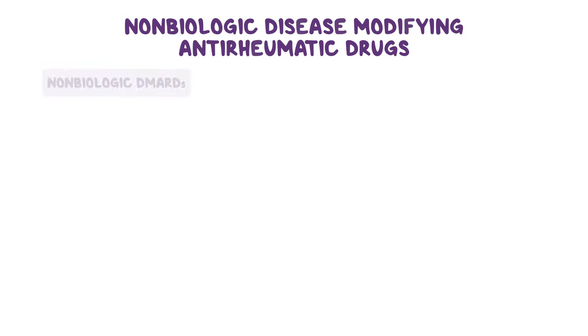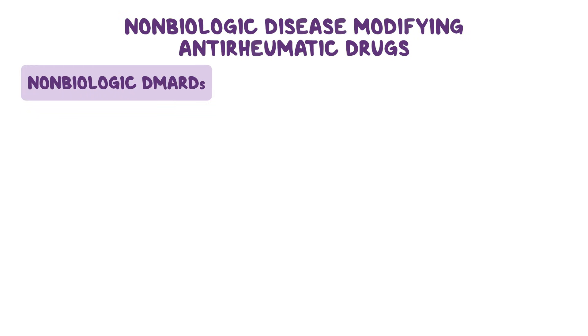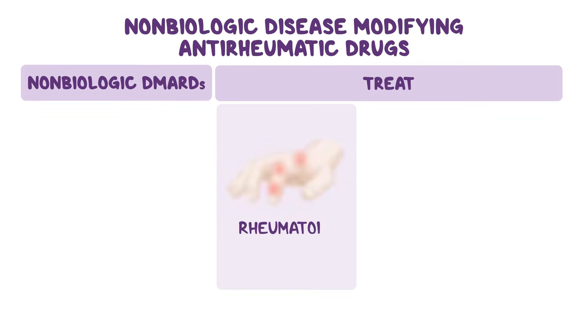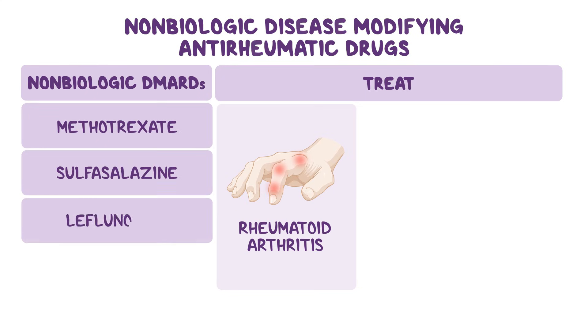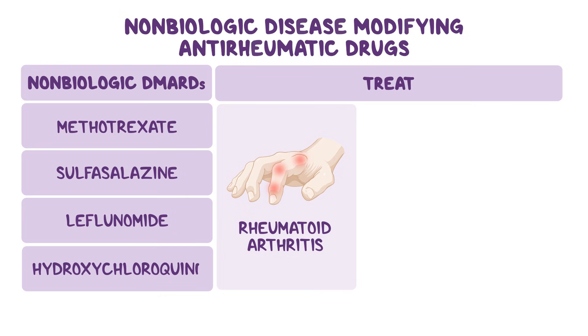Non-biologic disease-modifying anti-rheumatic drugs, or DMARDs for short, are a group of medications primarily used to treat rheumatoid arthritis. The most commonly used ones are methotrexate, sulfasalazine, leflunomide, and hydroxychloroquine.